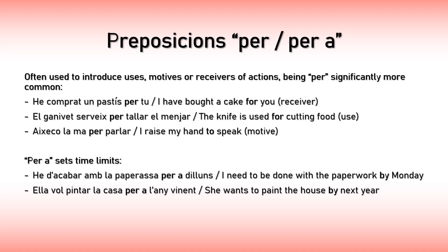The preposition PER is also used for setting time limits. For example, 'He d'acabar amb la paperassa per dilluns' — 'I need to be done with the paperwork by Monday.' Monday is a time limit, so you use PER to specify it. 'Ella vol pintar la casa per l'any vinent' — 'She wants to paint the house by next year.' Same thing — next year is a time limit, and you specify it with PER.